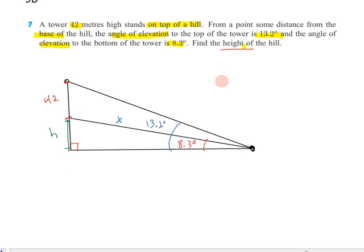To find x in the upper triangle, I need to know a little bit more about the angles, and so I'm going to try and fill out information about these angles. First, I know that this whole arc is 13.2 degrees, but this segment of it is only 8.3, which means the remaining segment must be the difference between 13.2 and 8.3. That's 13.2 take away 8.3, and that should be 4.9 degrees.